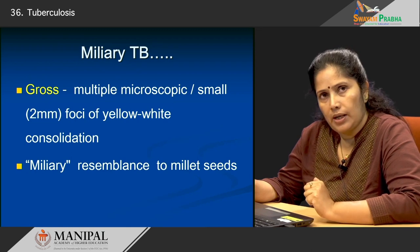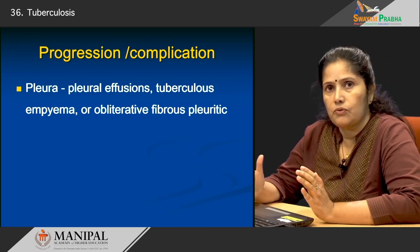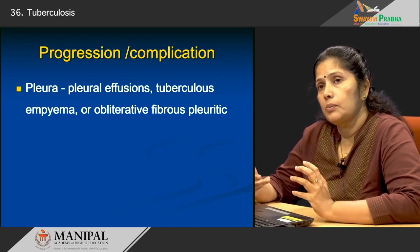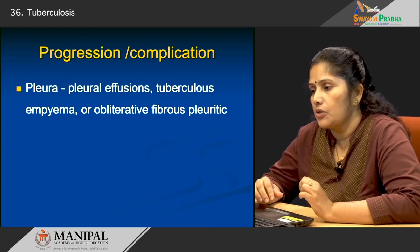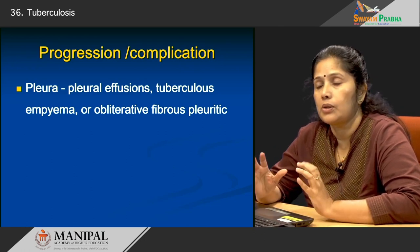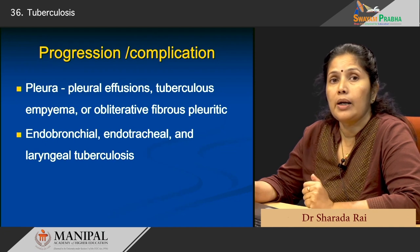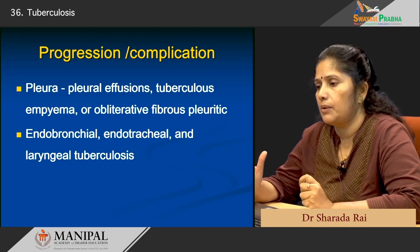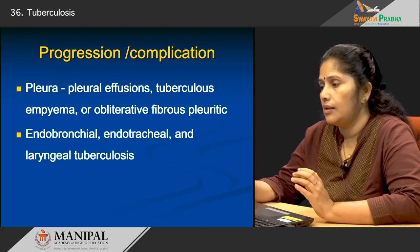How do these lesions progress? A patient with miliary tuberculosis is likely to develop pleural effusion, or they can develop a tuberculous empyema, or the entire pleura can undergo fibrosis resulting in obliterative fibrotic pleural lesions. Patients can also rarely develop endobronchial, endotracheal, or laryngeal tuberculosis, though it is more common for the lesion to spread into the pleura than into the endobronchial or endotracheal regions.